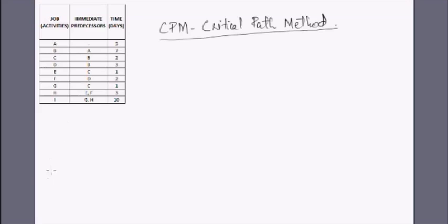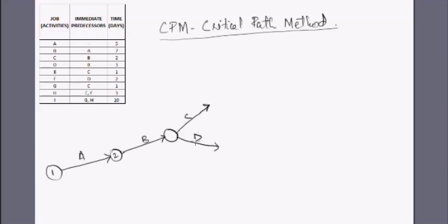We have taken the same question from the last class. We have nine activities. Let me redraw the diagram: the first activity A is followed by B from node 2, and then B has two followers C and D. The follower of C is E, and then we have E and F — merging them together because their follower is one and the same. From there we have G and H.